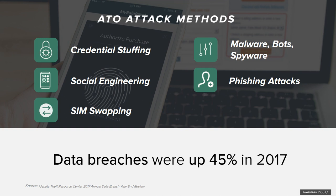Social engineering can take a couple of flavors. One is gathering publicly available information about somebody — think about how much information someone might put on Facebook: relatives, name, high school. From that, fraudsters can determine security question answers like your mother's maiden name or high school mascot. They then use that gathered data to impersonate the victim through your call center and take over their account.